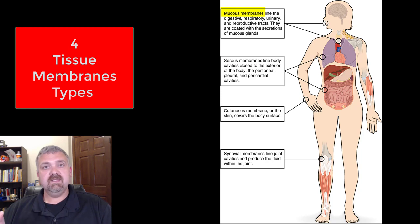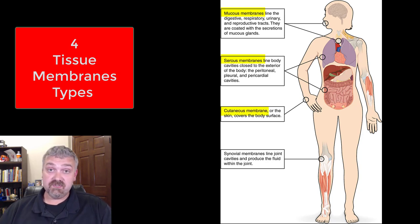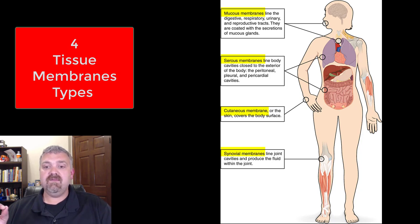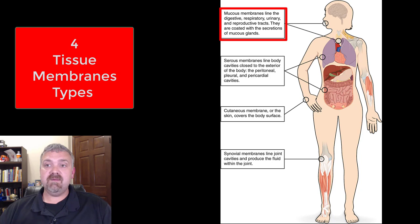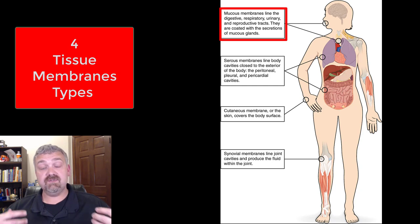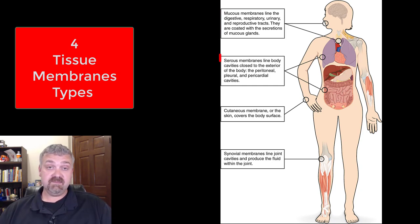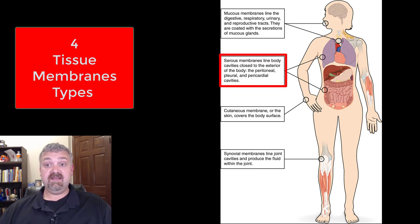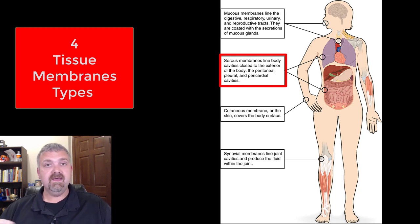We have mucous membranes, serous membranes, cutaneous membrane — which is a fancy way of naming your skin — and the synovial membranes. The mucous membranes are going to line cavities that are exposed to the outside environment. They are going to be lined with epithelial cells and they are going to churn out mucus.